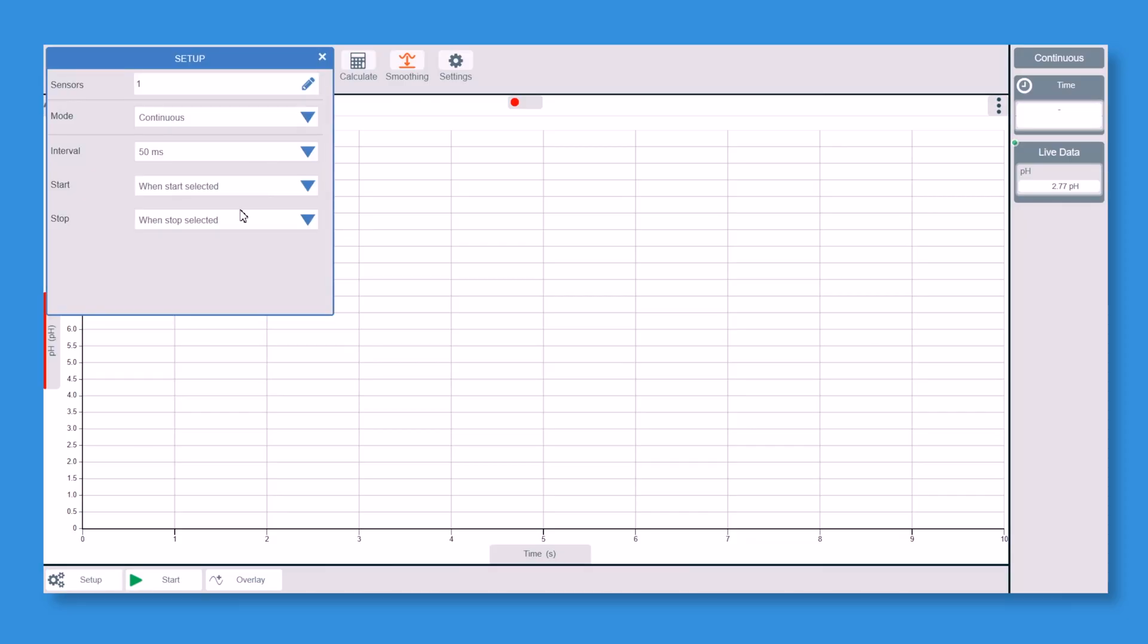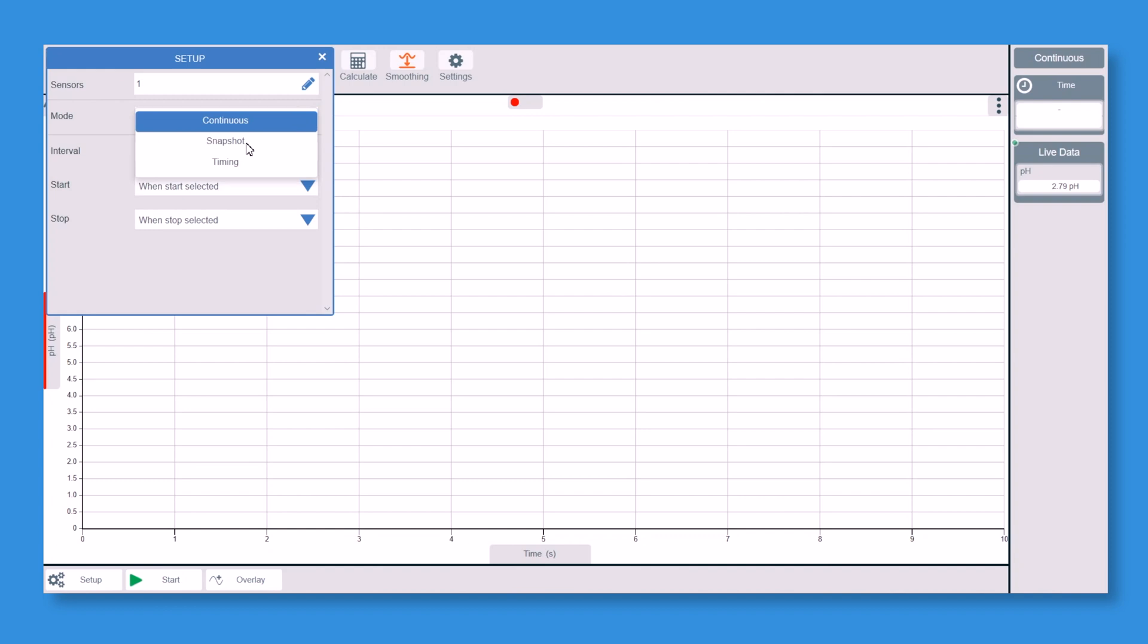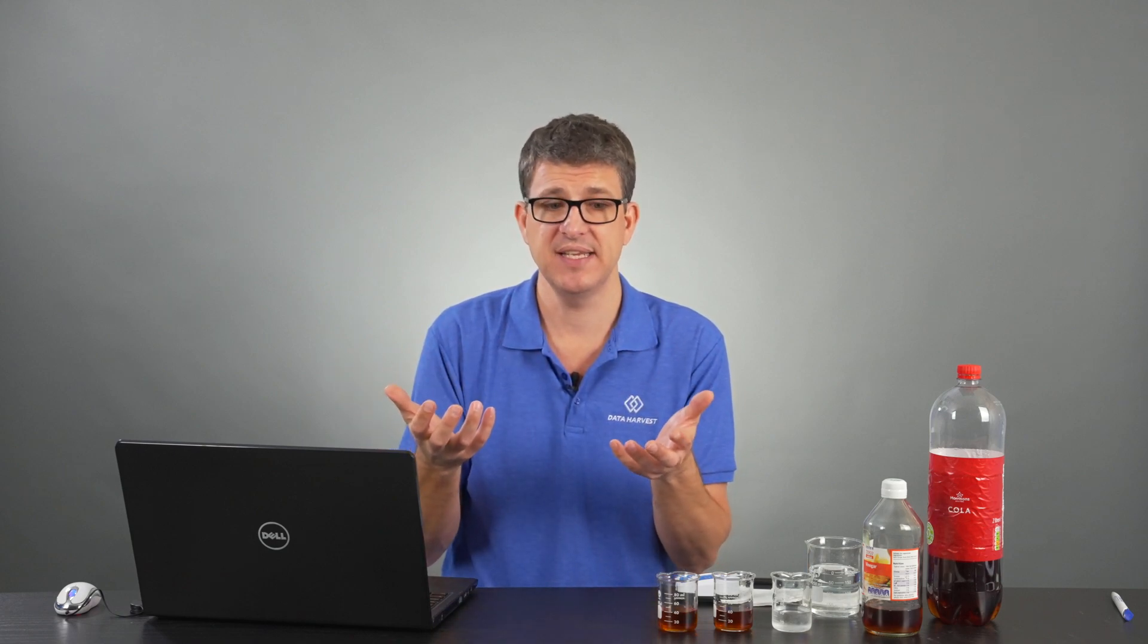Now for this experiment I want to have two graphs. I want to have a bar chart on one side and a table on the other. So what I'm going to do to start off with is tell it to do run snapshot. What snapshot means is it's only going to take a reading when I click on take sample. I don't want continuous data, I don't want loads of readings, I just don't need those when I'm having a snapshot in three different places for this experiment.